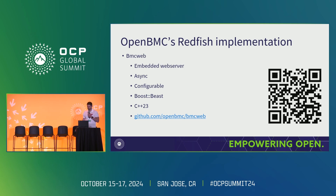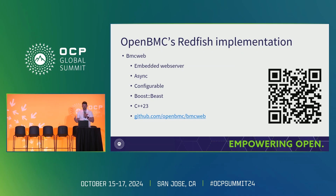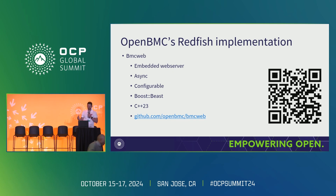OpenBMC's Redfish implementation. BMC Web is OpenBMC's embedded web server and our Redfish implementation. BMC Web uses asynchronous processing to allow for multiple requests at the same time. It's configurable and uses the Meson build system. BMC Web was originally built on Crow, a C++ framework for web services, but has since moved to Boost Beast. Like the rest of OpenBMC, it uses C++23, and you'll find a few C++23 features in BMC Web. The repository link is shown below with a QR code.